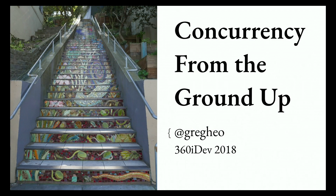Why don't we get started here and then we can maybe end a little early and head off to the Stump360. As the title suggests, I want to talk about concurrency today from the ground up. We'll ask ourselves why. I find that many programmers, myself included, are very top-heavy, where we know the Grand Central Dispatch APIs very well, the sort of leaf nodes. But a lot of times I don't understand what's going on under the hood, and I want to understand that a little bit better.